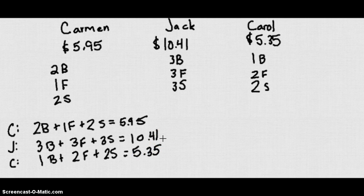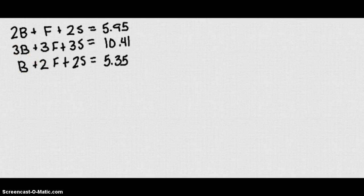So we can use this system of equations to find the unit price for burgers, fries, and soda. Alright, so last time we used substitution to find our variables. This time we're going to go ahead and try using elimination.